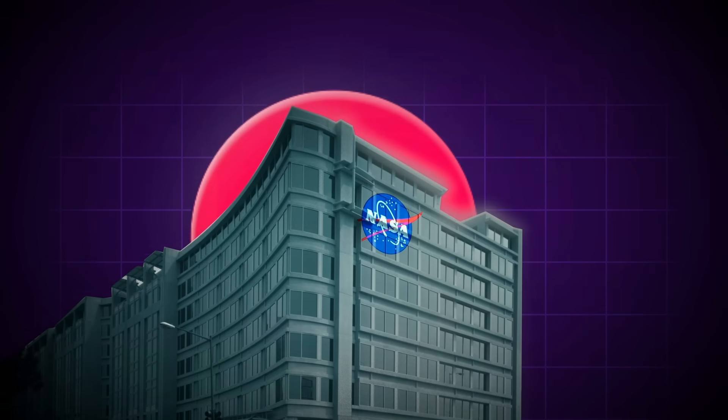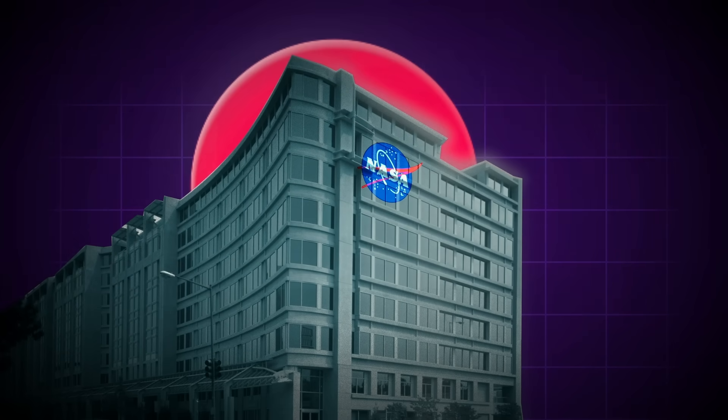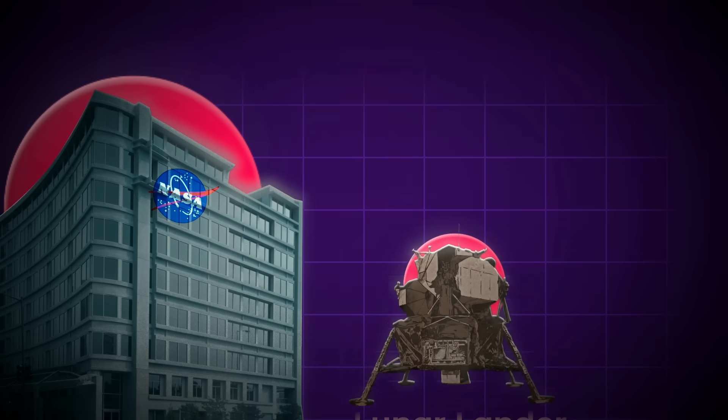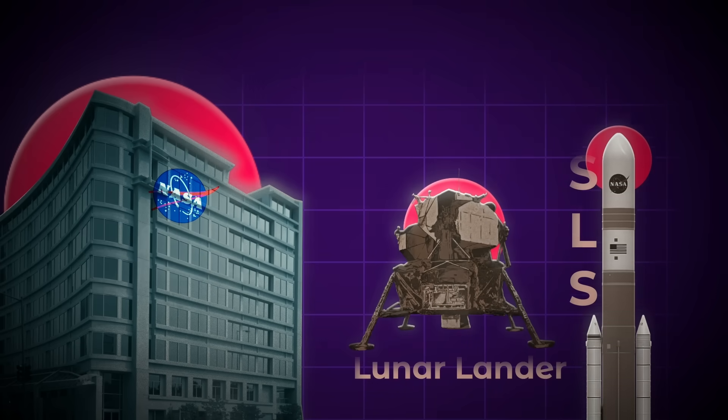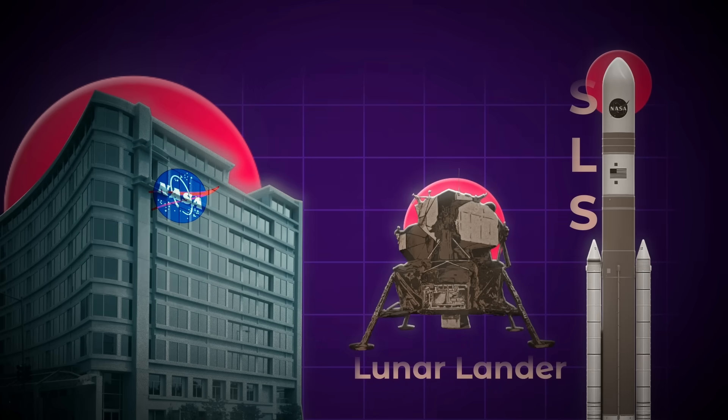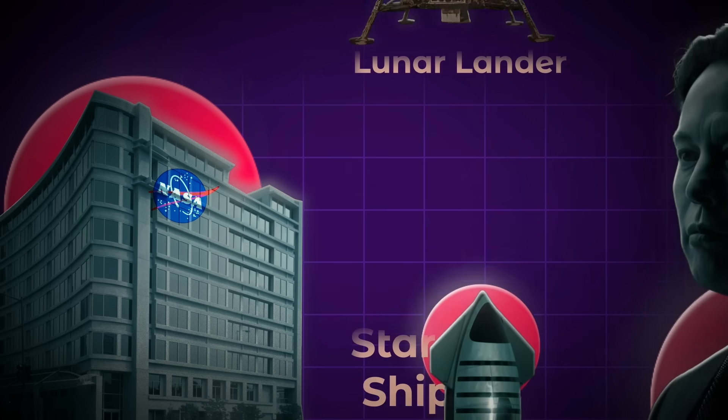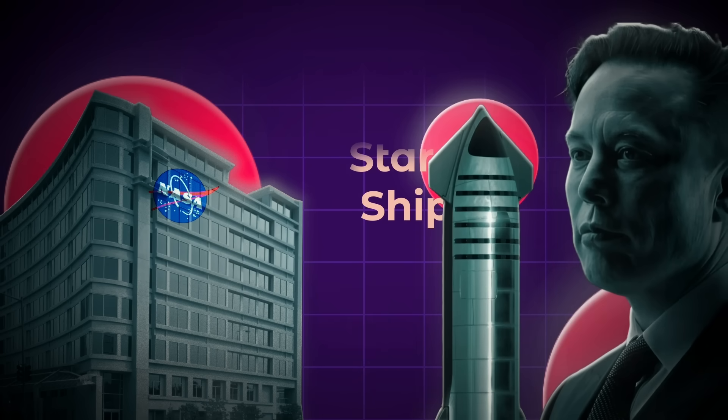And this is where SpaceX comes in. NASA couldn't afford to develop their own lunar lander the way that they had done for SLS. They ran out of stuff to recycle, but they could throw a few billion dollars at SpaceX to buy a lunar human landing system variant of their incredible new Starship rocket, which SpaceX was already developing independently to fulfill Elon's dream of colonizing Mars. So Starship was going to happen with or without NASA support.